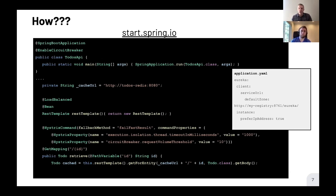Here's a simple code snippet. You go to start.spring.io, include dependencies in your Maven or Gradle build, and with just a couple of annotations you can indicate that a to-dos application has circuit-breaking capabilities. You wire together a RestTemplate making calls over the network, load-balanced across endpoints resolved transparently using service discovery. The URL to the dependent service — called to-dos-redis — resolves to endpoints without the application needing to know details.